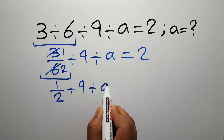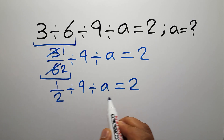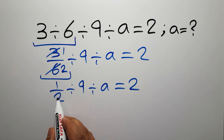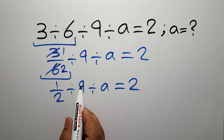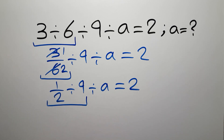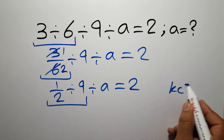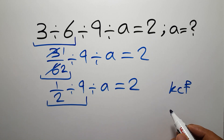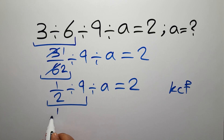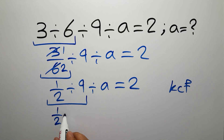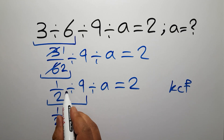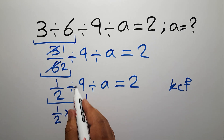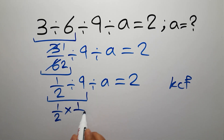Now we have 1 over 2 divided by 9, divided by a, equals 2. We have to do this division: 1 over 2 divided by 9. According to the KCF rule — K stands for Keep, C stands for Change, and F stands for Flip — keep the first fraction 1 over 2, change division to multiplication, and flip the second fraction to get 1 over 9.